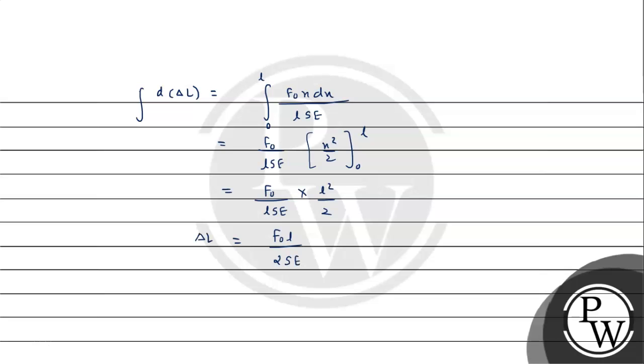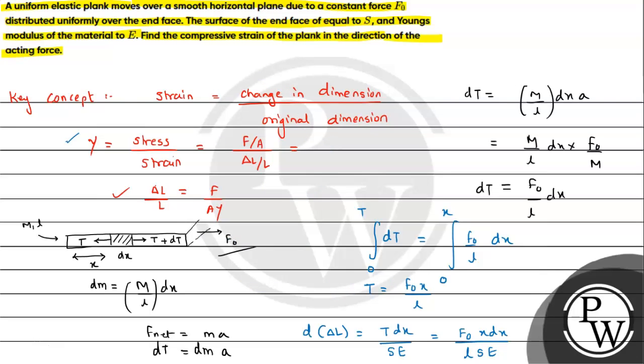And this will be delta L, so finally we have the value of strain which is delta L upon L, and that will equal F0 upon 2SE. So this is the answer to the question. I hope you understood the solution, all the best.